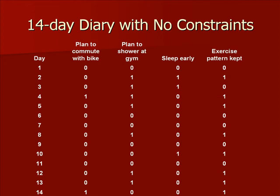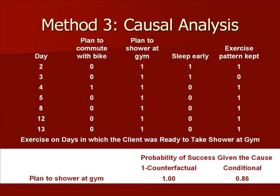Let's show the actual data analysis. Recall our original data, which we have modified by combining rain and commute by biking. Every day we were planning to commute with the bike and it rained, we treat it as if we were not planning to commute with the bike — we change the zeros and ones so that if it rains, commuting with the bike would have a zero for its value. To examine the effect of showering at the gym, we reduced the data to all days in which we were planning to shower at the gym. There are a total of seven such days shown in this slide, and the probability of exercise is six out of seven days. This is the maximum probability of exercise.